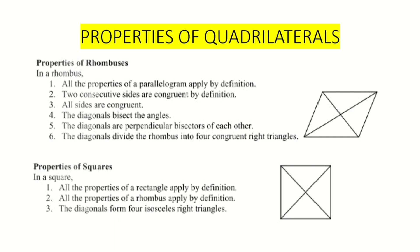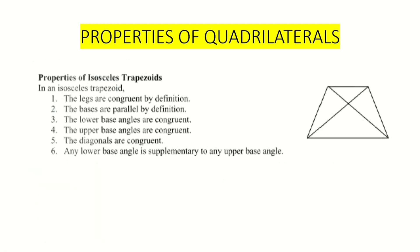Number six, diagonals divide the rhombus into four congruent right triangles. For the properties of a square: it has all the properties of a rectangle and all the properties of a rhombus, both by definition. Additionally, the diagonals form four isosceles right triangles. For the properties of isosceles trapezoids: the legs are congruent by definition, bases are parallel by definition, lower base angles are congruent, upper base angles are congruent, diagonals are congruent, and any lower base angle is supplementary to any upper base angle.